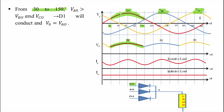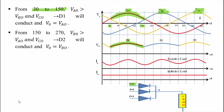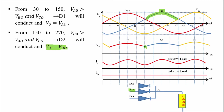Similarly, from ωt = 150° to 270°, we can see that the waveform of phase B is at the top, so Vb0 is greater than both Va0 and Vc0. Only diode D2 will conduct because Vb0 is applied to D2, and we get output voltage V0 = Vb0. So output voltage V0 = Va0 from ωt = 30° to 150°, and V0 = Vb0 from ωt = 150° to 270°.